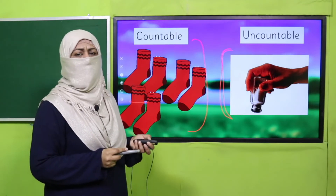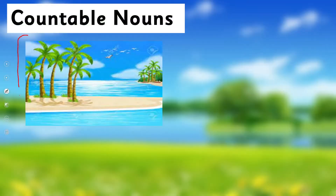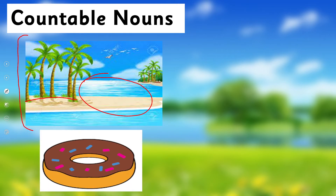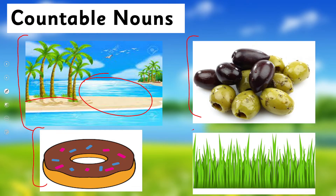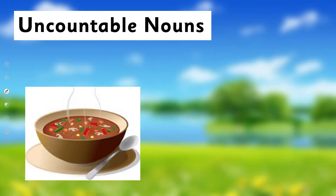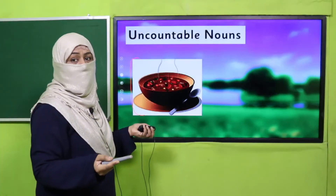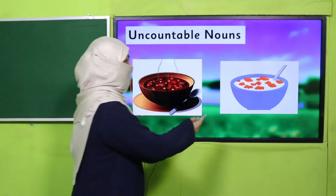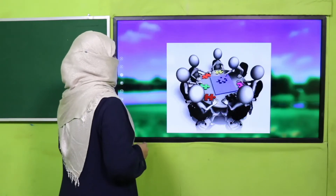Here is a picture of an island — the picture is countable, and we can count the trees, but the water in it is uncountable. One donut is countable; olives are countable. But grass is uncountable. A bowl of soup — soup is uncountable. A bowl of cereal — cereal is uncountable. Now you understand the difference.